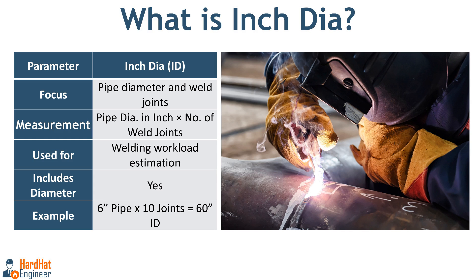For example, let's say you are welding 10 joints on a 6 inch pipe. You calculate inch diameter like this: inch diameter equals pipe diameter in inches multiplied by the number of joints. For example, 6 inch pipe multiplied by 10 joints equals 60 inch diameter. This helps in estimating the welding workload. The bigger the pipe or the more joints, the higher the inch diameter — meaning more work. So this is useful for estimating the amount of welding work involved.